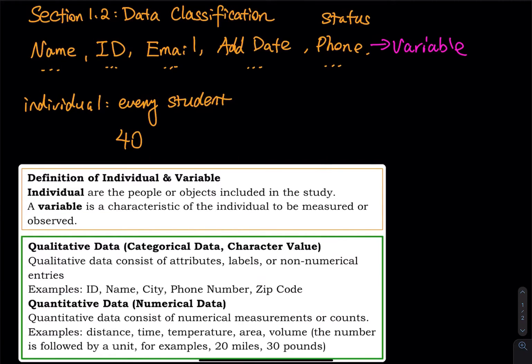So what is the definition of individual and variable? Individuals are the people or objects included in the study, so 40 people in the class means there are 40 individuals in the roster. A variable is a characteristic of the individual to be measured or observed. I have these students. I expect to observe the name, the ID, the email, the add date, the status, and the phone number of the student. They are all variables.